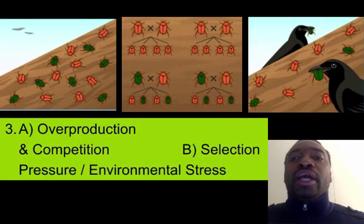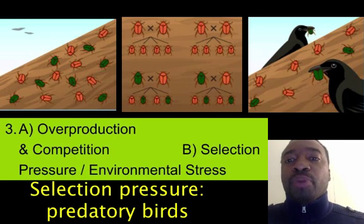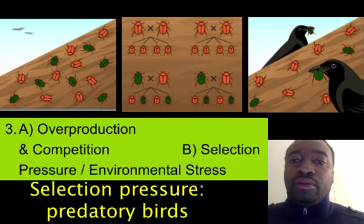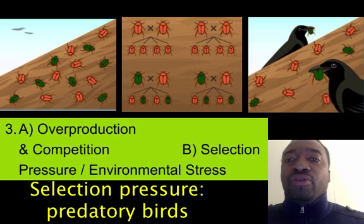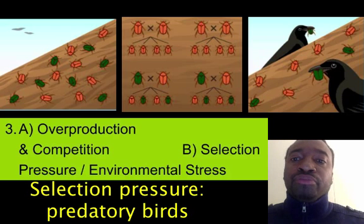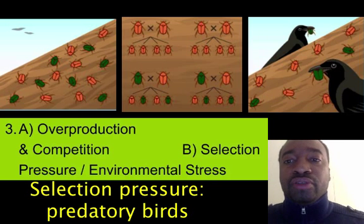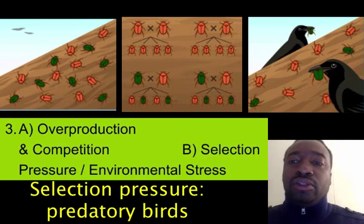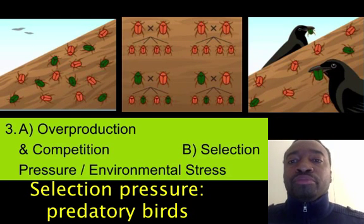The selection pressure, of course, are these birds. Because of the background, maybe the red ones are camouflaging better than the green ones, or maybe the birds just have a preference for the taste of green ones — there's not enough information to deduce here — but the selection pressure are the birds, and they are selectively eating the green ones.